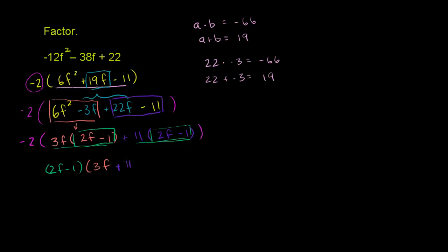You can distribute if you like: (2f - 1) times 3f gives you this term, (2f - 1) times 11 gives you that term. And we can't forget that we still have that -2 hanging out outside. We're done factoring it. -12f² - 38f + 22 = -2(2f - 1)(3f + 11).